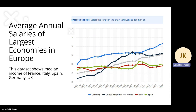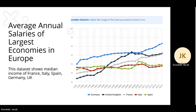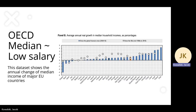The next data set is the average annual salaries of the largest economies in Europe. Here we can see the different median salaries over time for countries such as France, Italy, Spain, Germany, and the UK. The next data set is the OECD median to low salary, which shows the median annual change of income of major EU countries.